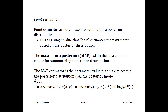Another approach for summarizing the posterior distribution is to use a set of point estimates. A point estimate is a single value that, in some way, best describes some aspect of the distribution. The difference between an estimator and an estimate is that an estimator is the function that you plug the data into in order to get an estimate. An estimator is actually a random variable, whereas an estimate is a number you get after observing the data.